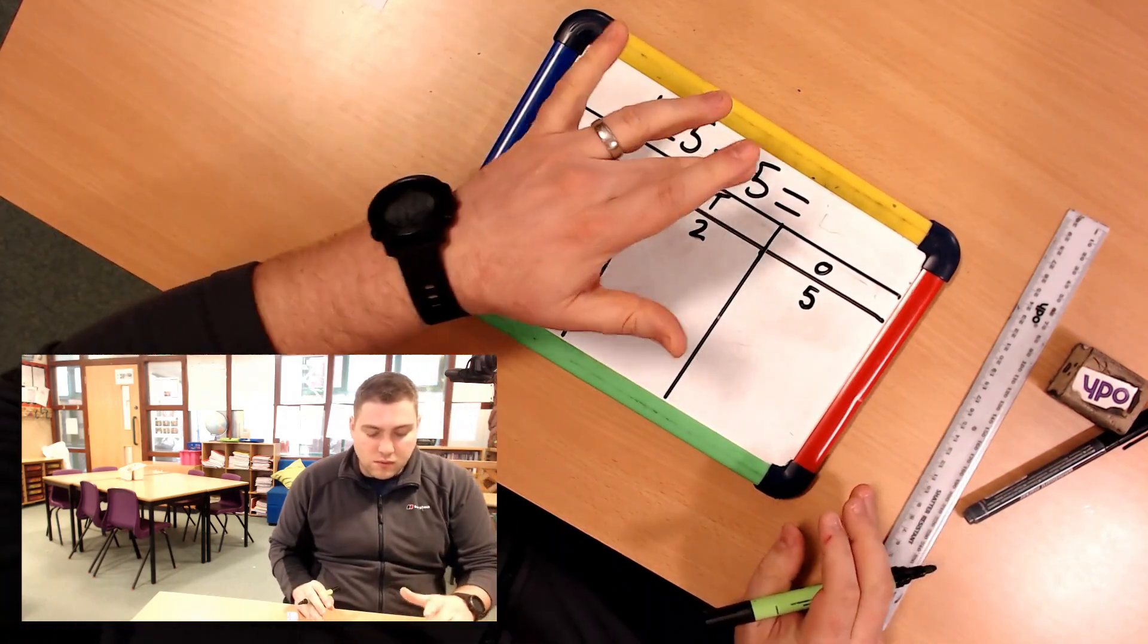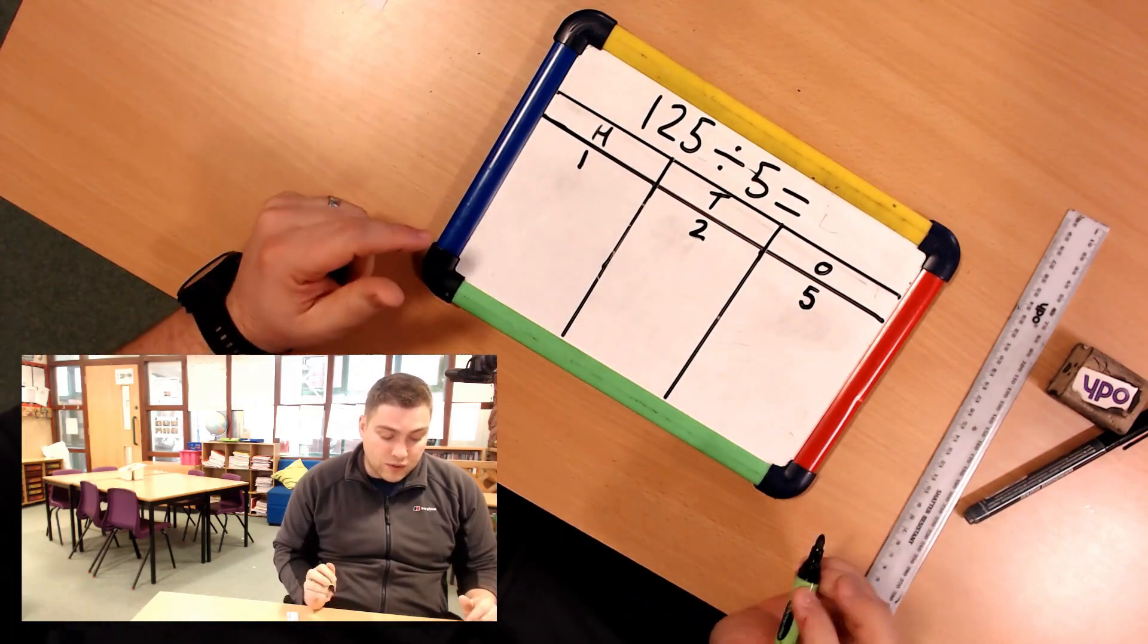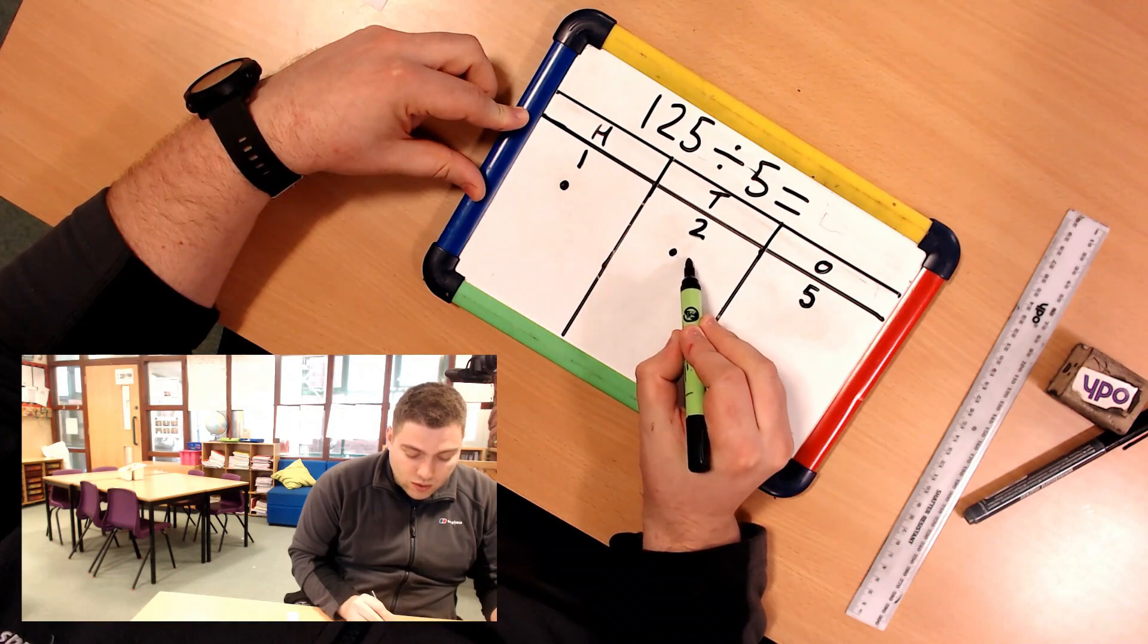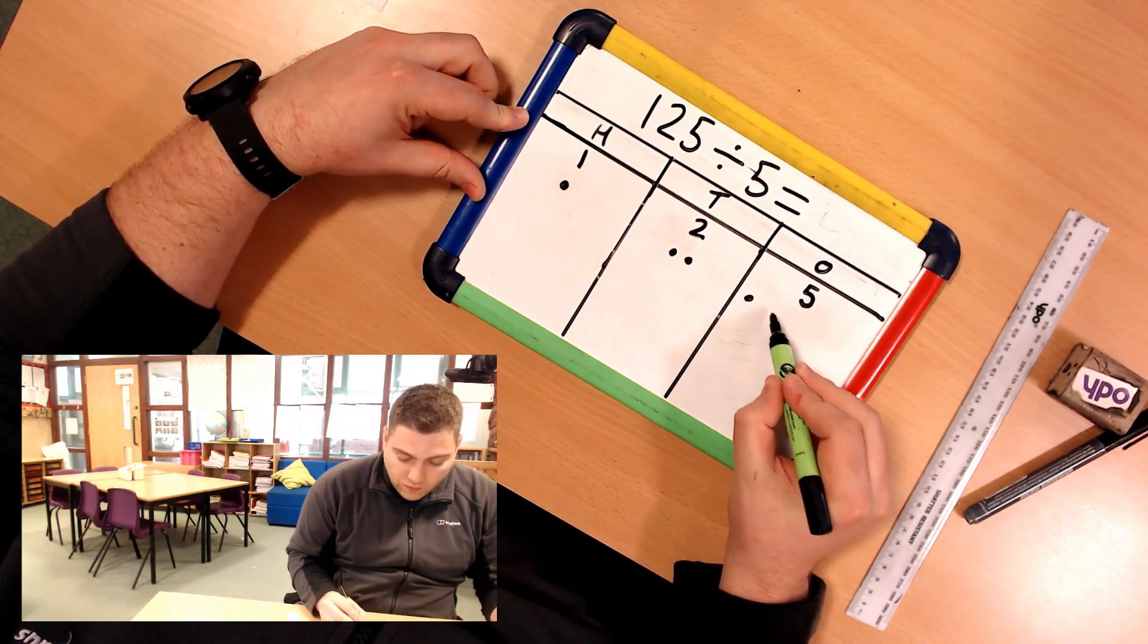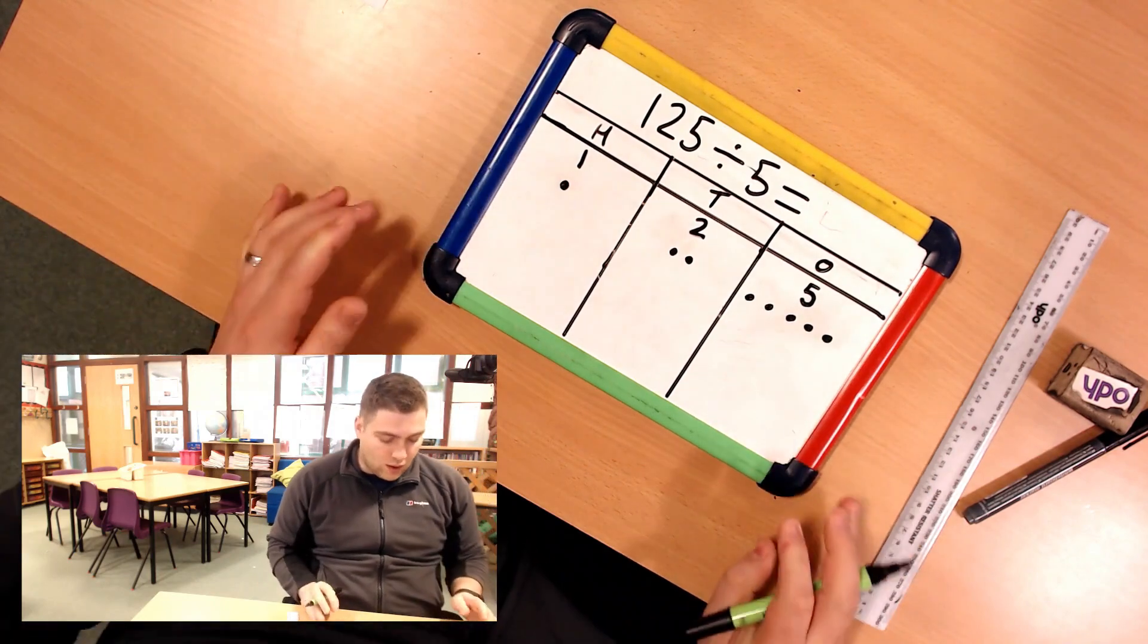Okay, but to be able to divide by 5 I need to make it a little bit more pictorial. So I'm going to represent it using dots. So I've got 100, two 10s and 5 1s.